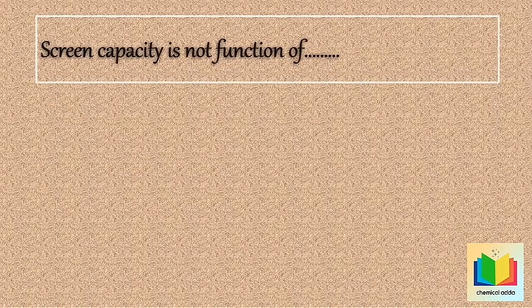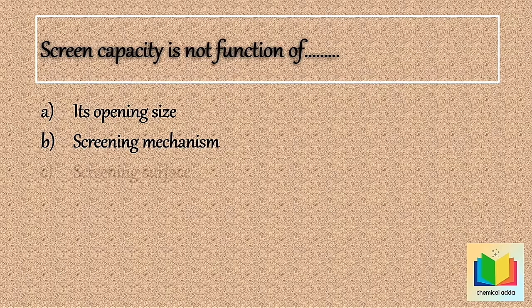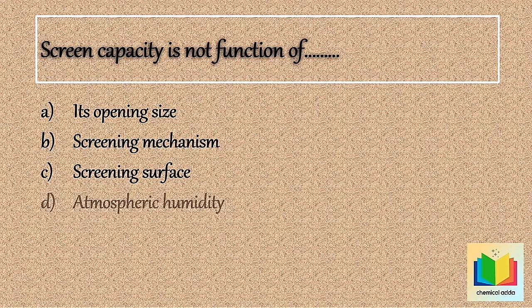Next question: Screen capacity is not a function of — Option A: Its opening size. Option B: Screening mechanism. Option C: Screening surface. Option D: Atmospheric humidity.